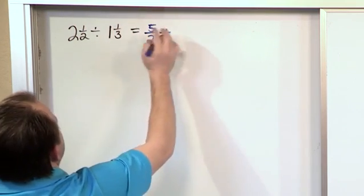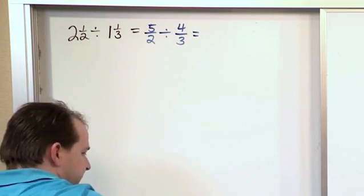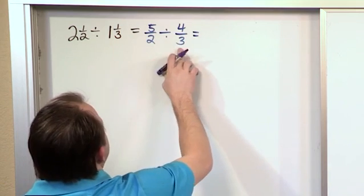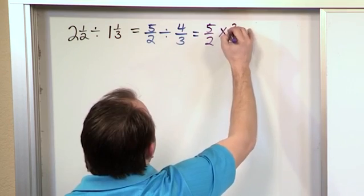3 times 1 is 3, plus 1 is 4, and we always write it again over 3. So what we have then is a situation where we have division of fractions. So we have the 5⁄2 as usual, and we change it to multiplication and we flip this over to 3⁄4.